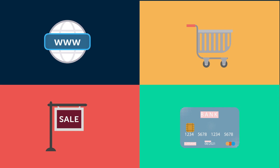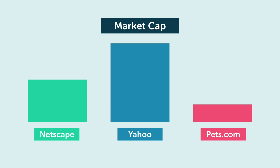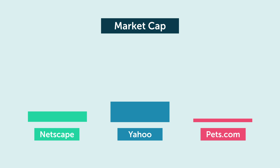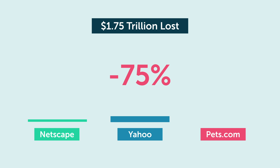Technology stocks began losing value faster than they had gained it. By the fall of 2000, most internet stocks had declined in value by 75%, wiping out $1.75 trillion in value. The majority of the dot-com companies that once had multi-million dollar valuations began to fold.